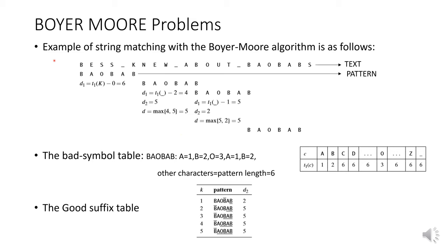To summarize the logic of Boyer-Moore: if there are no matched characters and the mismatch occurs immediately, you just calculate D1, which equals the shift value of the mismatched text character minus the number of matched characters. If some characters of the pattern match some characters of the text, then you calculate both D1 and D2 and shift the pattern by the maximum of D1 and D2. D1 is easier; D2 is a little tricky.